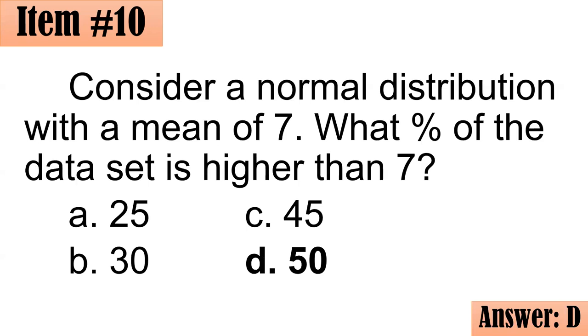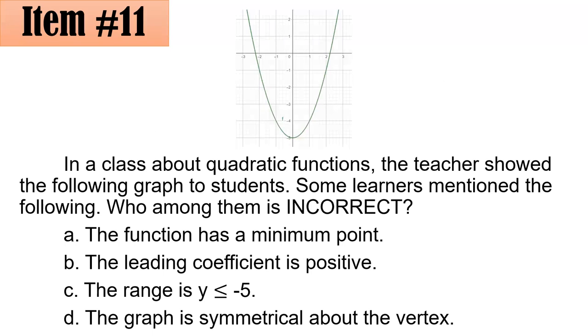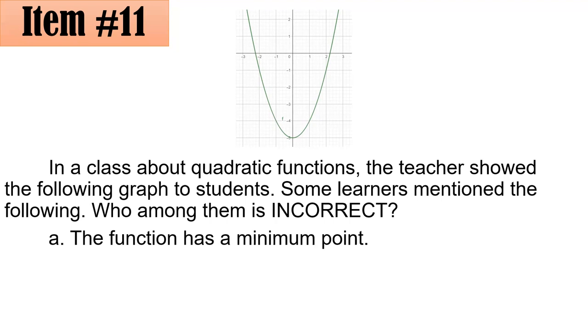Number eleven. In a class about quadratic functions, the teacher showed the following graph to students. Some learners mentioned the following, who among them is incorrect. Letter A, the function has a minimum point. Tama po ba siya? That person is actually correct. Since the quadratic equation is opening upward, then the vertex is the lowest point or the minimum point. So A is actually correct.